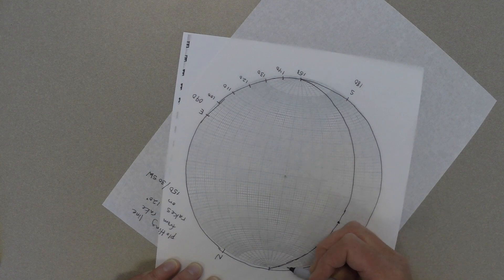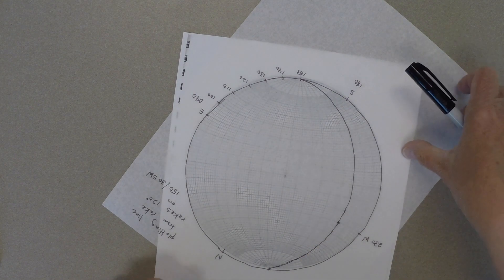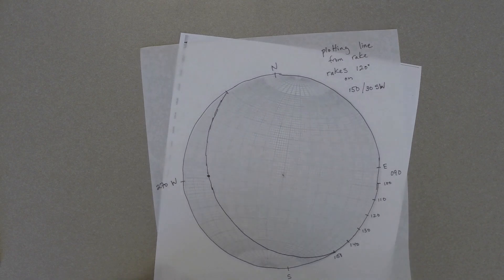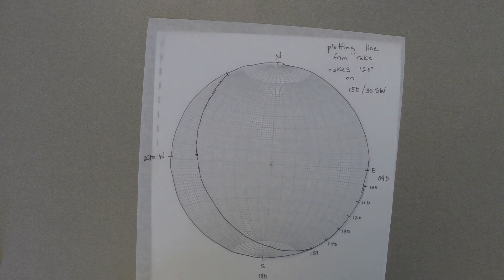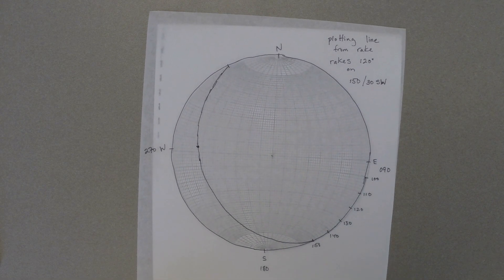Then if we spin the tracing paper back so that north on the tracing paper lines up with north on the stereonet, then we can see the dot representing the rake of that line, and that dot will always lie on the great circle of the plane.